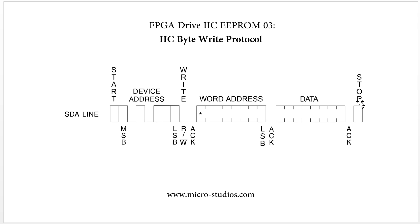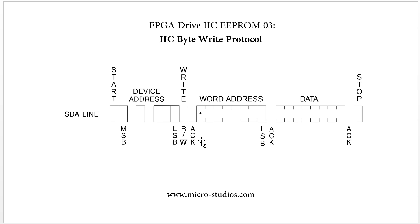One thing to note: every byte of data starts from the highest bit — the MSB. This is the highest bit, and this is the lowest bit. It starts from the highest bit down to the lowest bit.